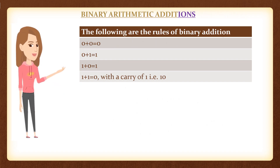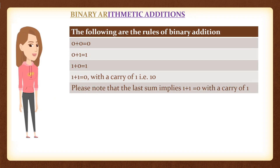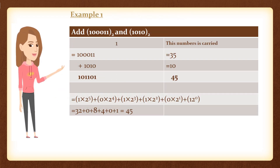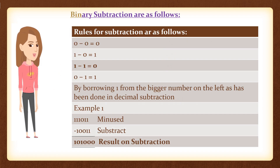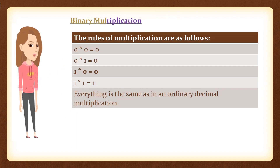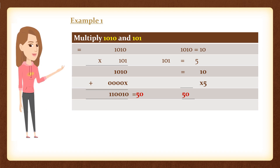Binary arithmetic — additions. The following are the rules of binary addition. Example 1: Add 1₁₁ to 1₀₁₀. Binary subtraction — the rules for subtraction are as follows. Binary multiplication — the rules of multiplication are as follows. Example 1: Multiply 1010 and 101.